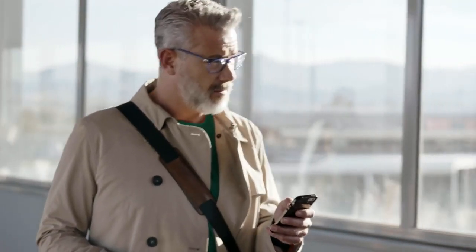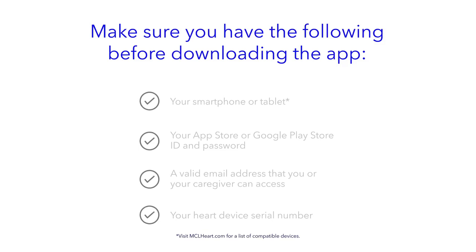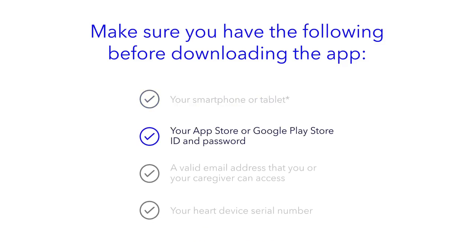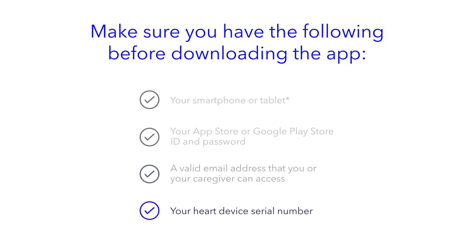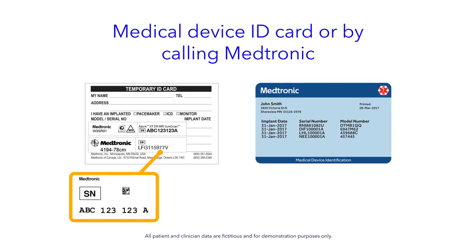Before you download the MyCareLink heart mobile app and connect it with your heart device, make sure you have the following items: your smartphone or tablet, your App Store ID and password, a valid email address that you or your caregiver can access, and your heart device serial number. The serial number can be found on your medical device ID card provided to you by your clinic, or found by calling Medtronic.